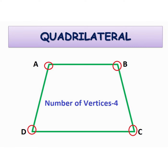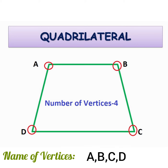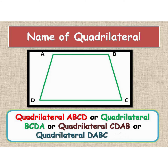A quadrilateral has four vertices. For this figure, the vertices are A, B, C, and D.